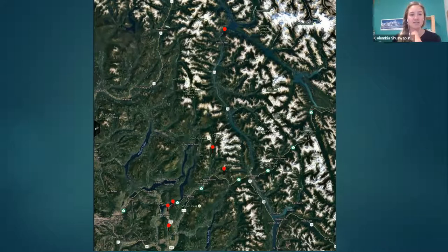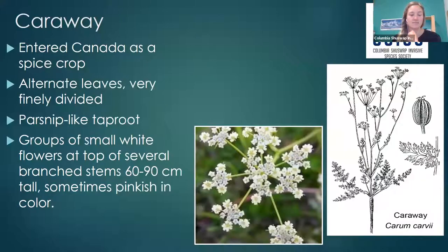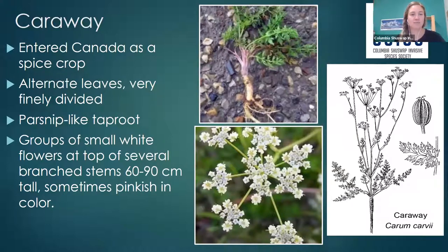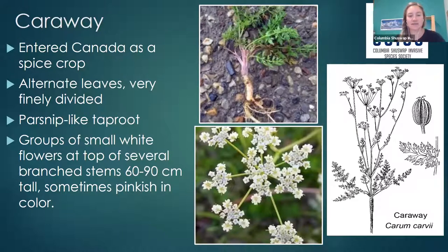There are six sites total in our region for wild shirvel — not too many. Caraway entered Canada as a spice crop. It has alternate leaves that are really finely divided and a parsnip-like taproot with black skin and a white core. It has groups of small white flowers at the top and can grow 60 to 90 centimeters. The flowers are sometimes pinkish, which can help with identification.